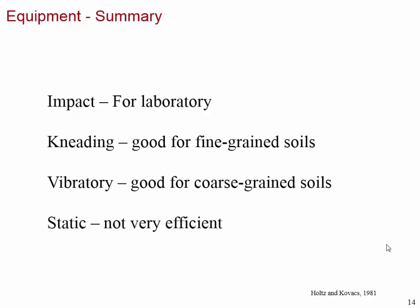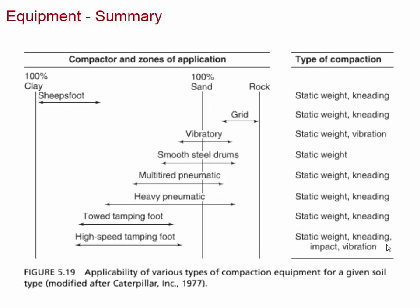Equipment summary: Impact is like the standard Proctor test — you apply impact energy to the soil by dropping a hammer. Kneading is good for fine-grained soil. Vibration is good for coarse-grained soil. Static compression is not very efficient and is normally used for asphalt-type materials. As the soil type goes from 100% sand toward more clay content, you shift from vibration toward tamping foot rollers.